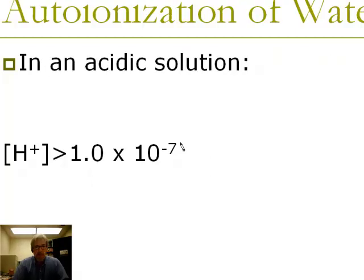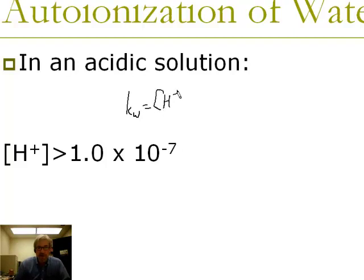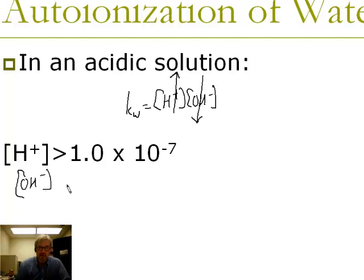In an acidic solution, the H⁺ concentration has to be higher than it normally would be in pure water, which is 1 × 10⁻⁷. So H⁺ concentration is bigger than that in an acidic solution. Because Kw is a constant composed of [H⁺] × [OH⁻], if [H⁺] gets larger, [OH⁻] must get smaller to keep the product constant. So in an acidic solution, the OH⁻ concentration is less than 1 × 10⁻⁷.